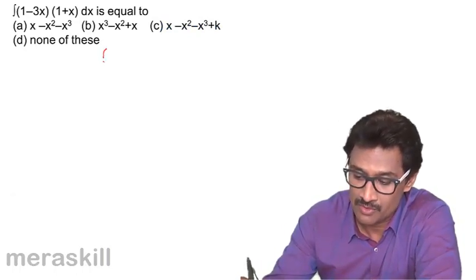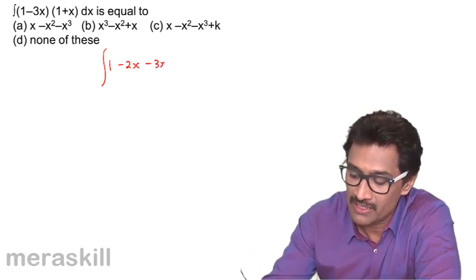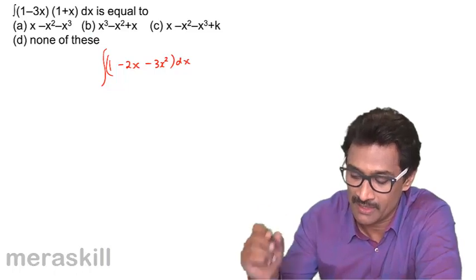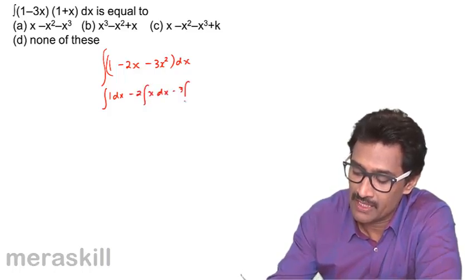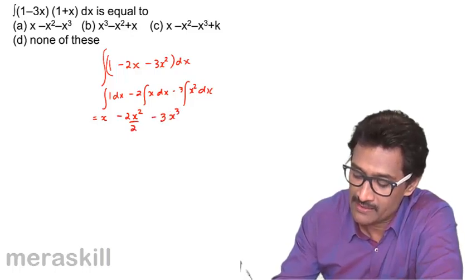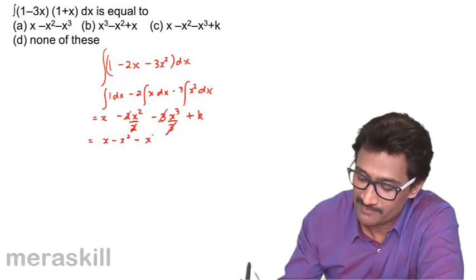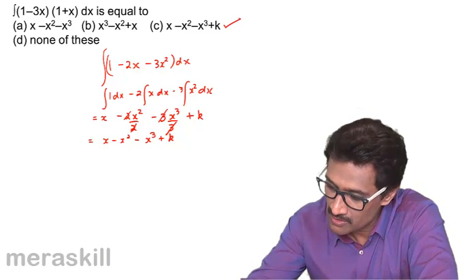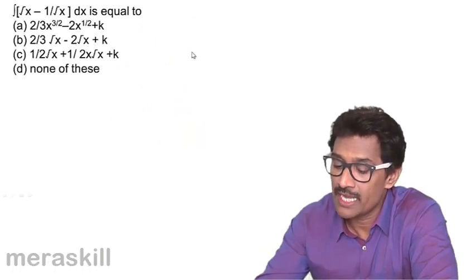For the integral of (1 - 3x)(1 + x) dx, we first expand the product: 1·1 + 1·x - 3x·1 - 3x·x = 1 + x - 3x - 3x² = 1 - 2x - 3x². Integrating gives x - 2x²/2 - 3x³/3 plus a constant, which simplifies to x - x² - x³ plus k. This is option C.